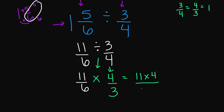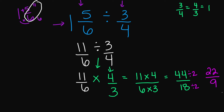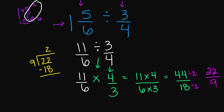Numerator: 11 times four. Denominator: six times three. 11 times four is 44, and six times three is 18. I can simplify 44 over 18 because two goes into both numbers. 44 divided by two is 22, and 18 divided by two is nine. However, this is an improper fraction, so let's turn this back into a mixed number. Nine on the outside, 22 on the inside. Nine goes into 22 two times. Nine times two is 18. 22 minus 18 equals four. So your answer is 22 over nine, or two and four ninths.